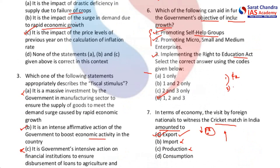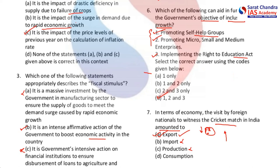The current account deficit is based on trade — if merchandise exports are more than merchandise imports, there won't be any current account deficit. If merchandise imports are higher than merchandise exports, that leads to a current account deficit. To cover up the deficit, the government has to follow many different strategies.